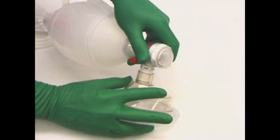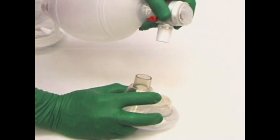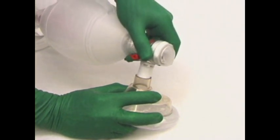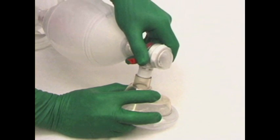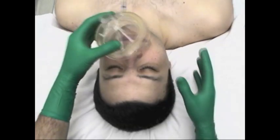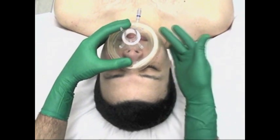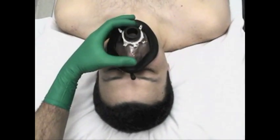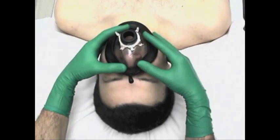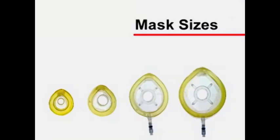The connector of the mask is a standardized 22-millimeter diameter orifice and connects the mask to a bag valve device. To maintain a good seal, it is imperative for the mask size and shape to conform to the facial anatomy. This is particularly important in the pediatric population. Thus, several masks, shapes, and sizes should be readily available.